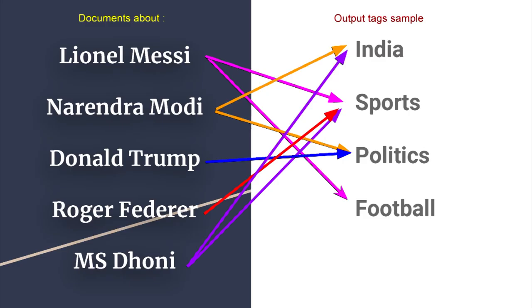What are tags? Tags are certain concrete classes which describe a document. For example, if you have a document about Lionel Messi, it should generate tags such as sports and football. Tags can also be looked at this way: if you search using tags, then the relevant document should come as a result.